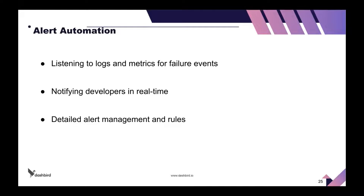The second core pillar is alert automation. We aim to cover your entire infrastructure and listen to any kind of negative event that might happen, giving you a notice in real time. We listen to log and metric data for events — for example, a code exception in your Lambda function, a timeout, API Gateway failures, DynamoDB throughput exceptions, and so on. Anything with a negative outcome we catch automatically, notify you in real time, and also let you configure arbitrary rules to direct that alert to the right place. You have control over what you get notified about.